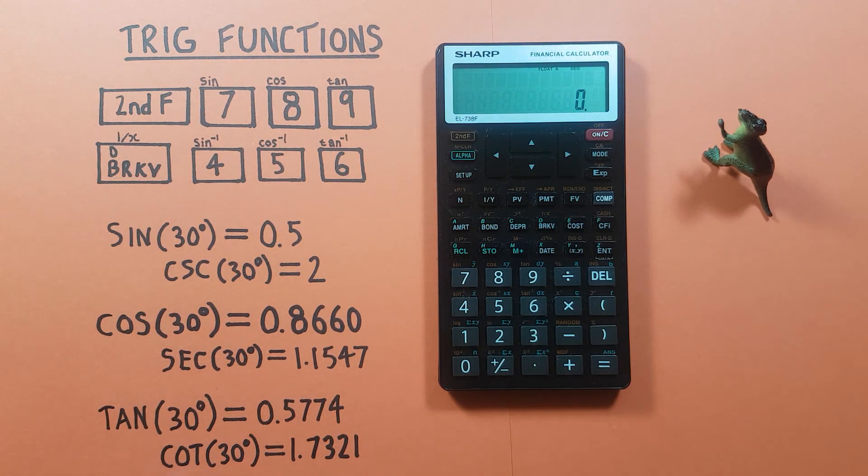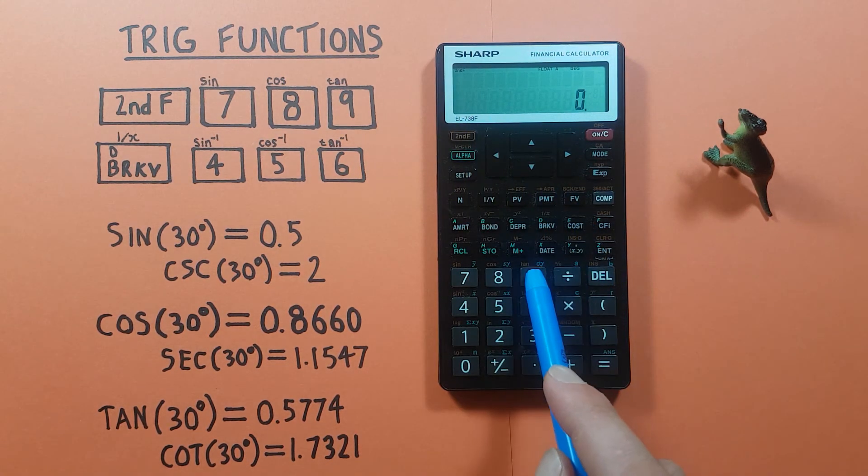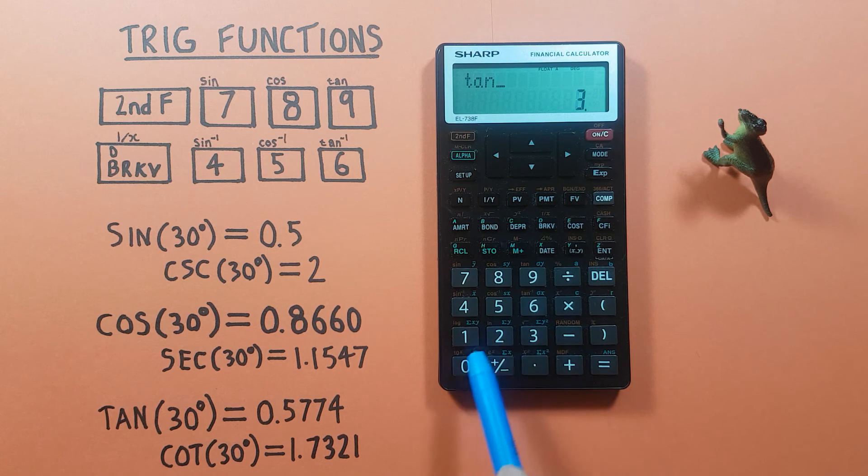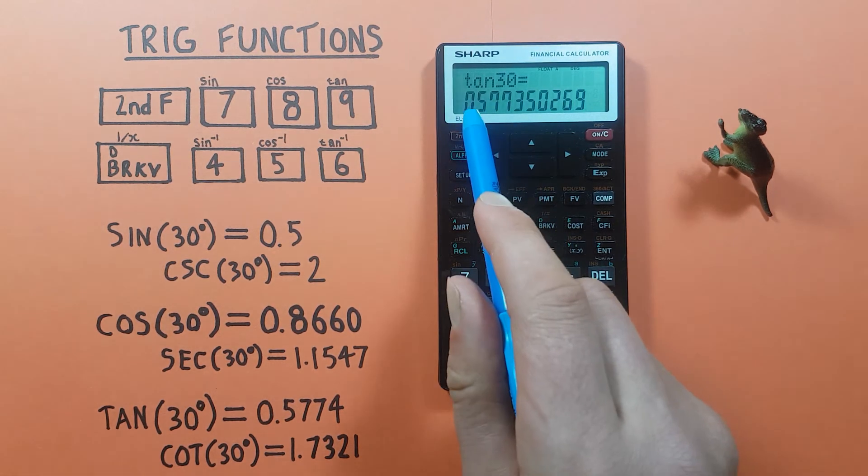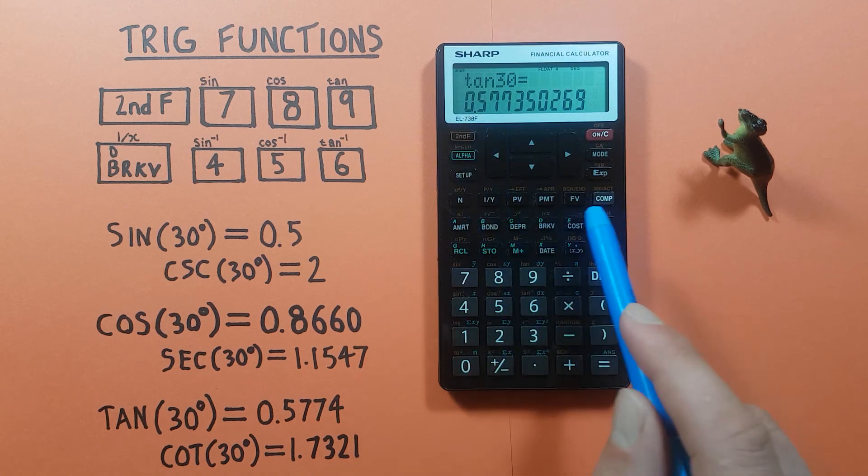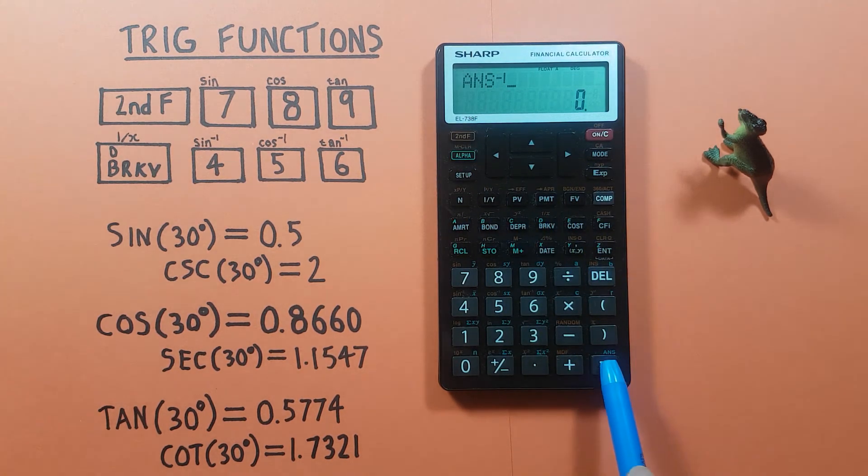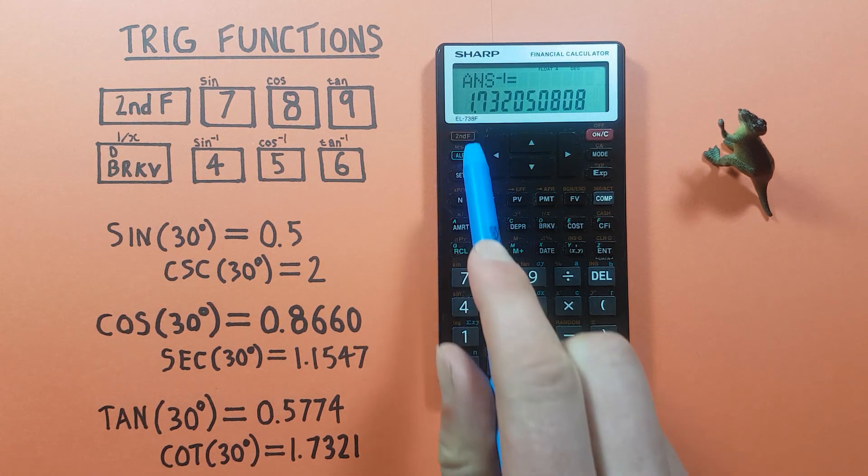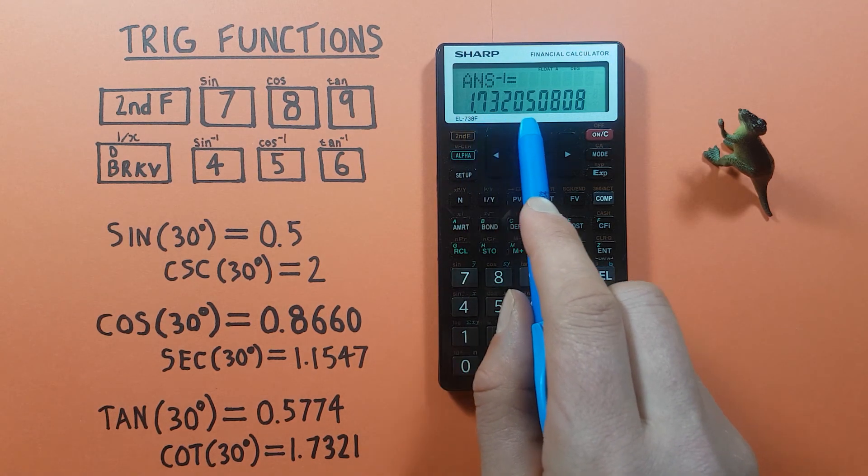And finally cotangent uses tan. So again, second, tan, 30, that gave us 0.5774, etc. And then second, break even, there we go. Gave us 1.732, etc.